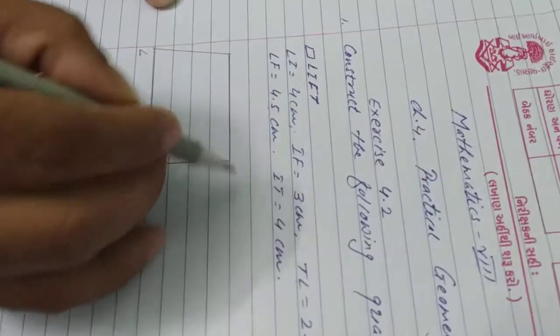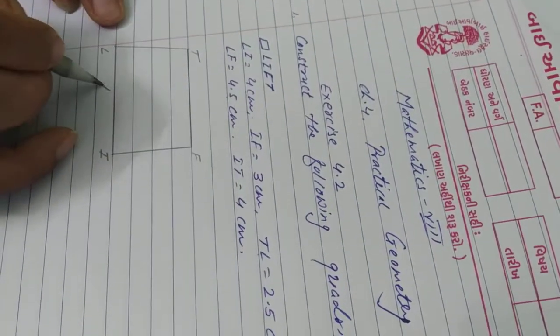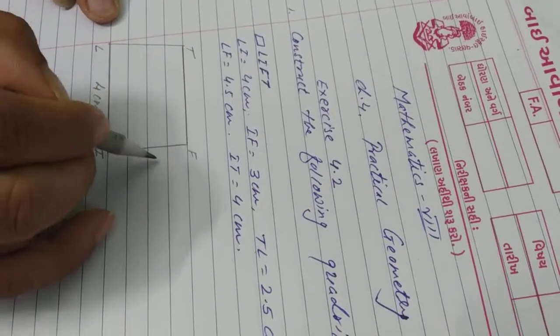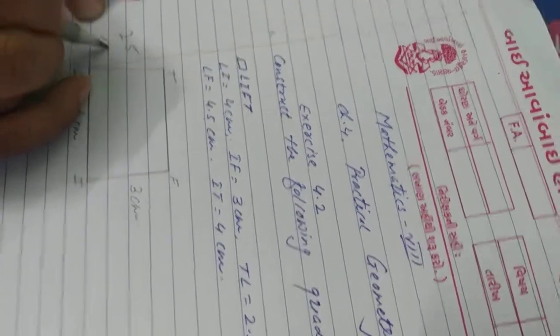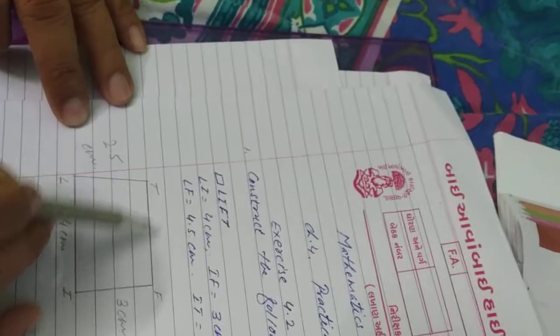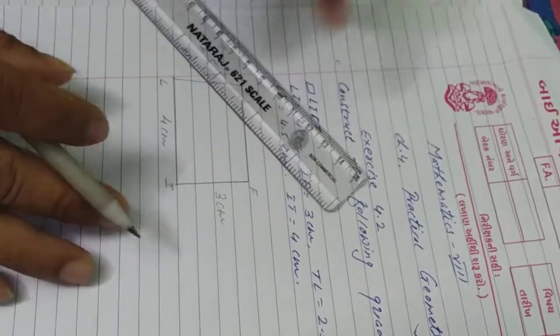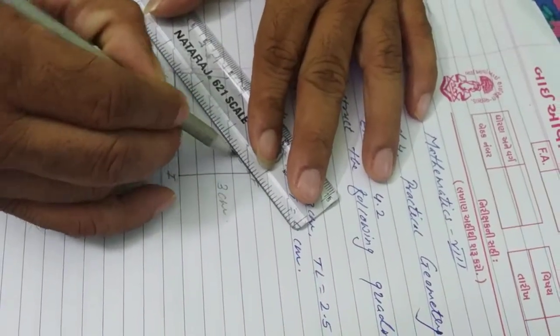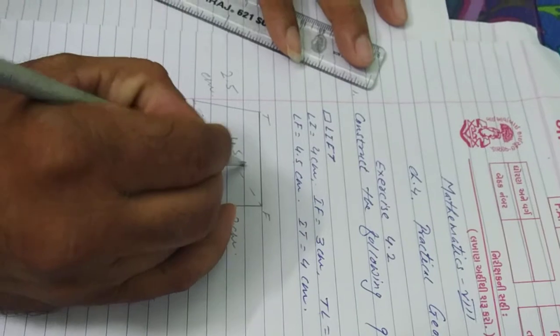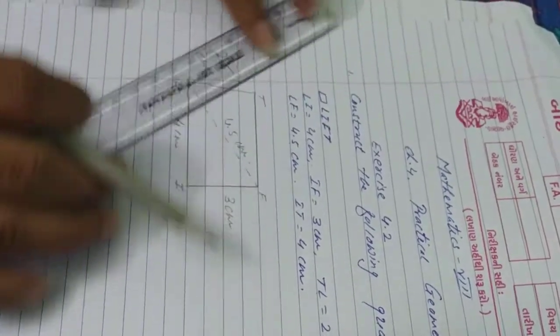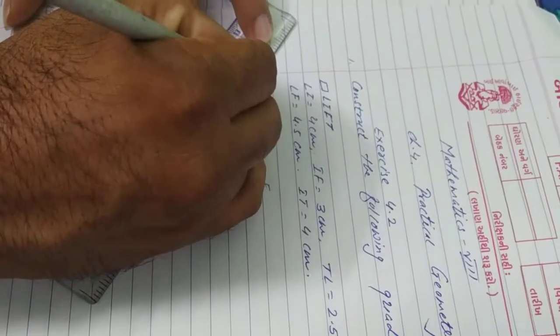See which quadrilateral is given, LIFT. See the different measurements: LI is equal to 4 cm, IF 3 cm, TL 2.5 cm. Then after what is given, LF, see it's about diagonals. So if you draw rough sketch, you come to know what is given and how we have to proceed. Then after IT is equal to 4 cm. So there are two diagonals and three sides, the measurement of different three sides are given.